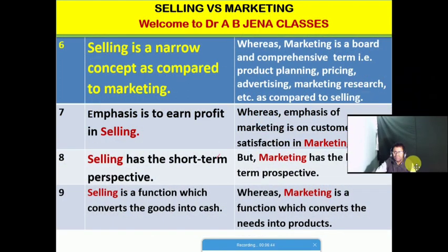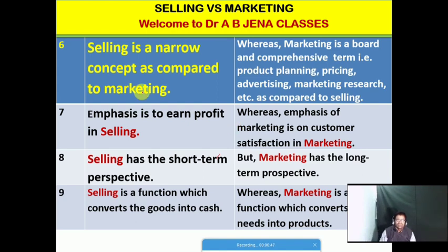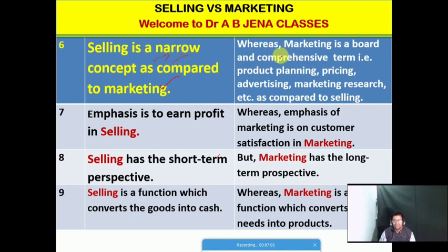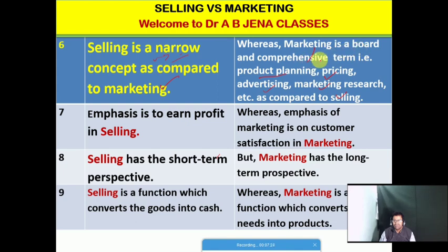The next basis of comparison is: selling is a narrow concept as compared to marketing. Selling is only concerned with selling whatever product is produced — goods and services are sold to the customer in order to earn profit. Whereas marketing is a broad and comprehensive term because product planning, pricing, advertising, and marketing research will all be conducted, as compared to selling. That is why marketing is a broad and comprehensive term as compared to selling.